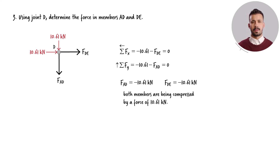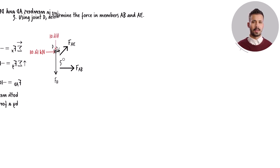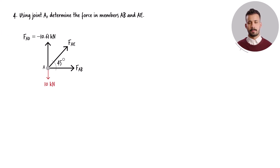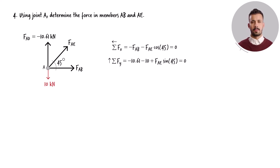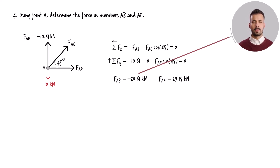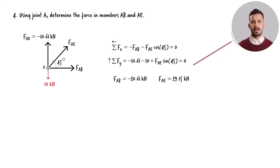The magnitude of the compressive force is 10.61 kN. Next, we examine joint A. Three member forces intersect at the joint. We have already identified one of these forces, leaving two unknown member forces. We can find these remaining forces by applying the equilibrium equations to the joint. Member AB carries a compressive force of 20.61 kN, and member AE has a tensile force of 29.15 kN.